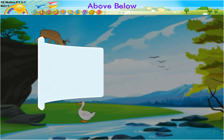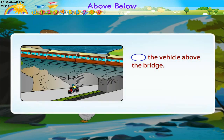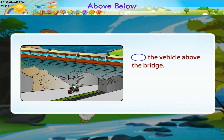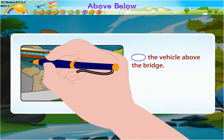Look at this picture and circle the vehicle above the bridge. So, which vehicle is above the bridge? Can you make out? Here, the train is above the bridge. Let's circle it.